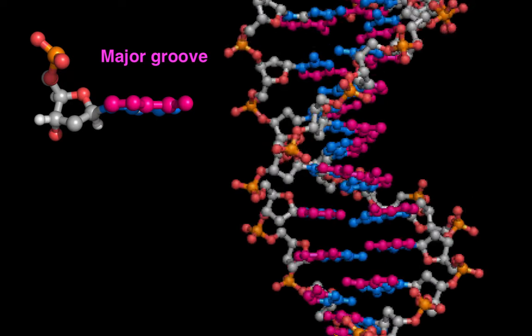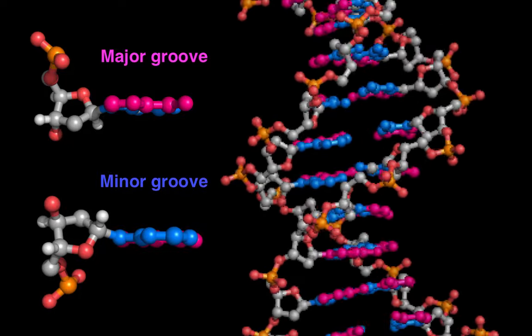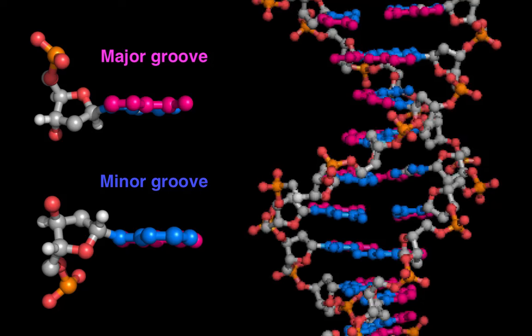Looking again at the left backbone, we can see that in the minor groove, the deoxyribose always points its ring oxygen down, kind of like an upside down Statue of Liberty.